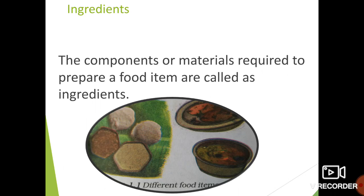So think about rice cooked at home. We take raw rice and boil it in water. Just two materials or ingredients are needed to prepare a dish of boiled rice. The components or materials required to prepare a food item are called ingredients.